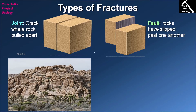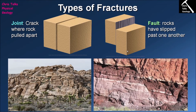The other type of fracture that can form is a fault. In the case of a fault, once again we've taken a block of rock and split it into at least two units. In the case of a fault, these blocks of rock will move relative to each other — they will slide past each other. So there is motion involved. This is the key difference between a joint, where there is no relative movement, and a fault, where there is relative movement between the blocks.